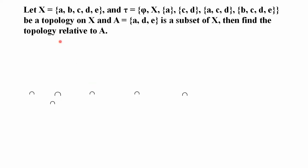Let X = {a, b, c, d, e} and τ = {φ, X, {a}, {c,d}, {a,c,d}, {b,c,d,e}} — یہ ہمارے پاس main set اور اس کی topology given ہے۔ And A = {a, d, e} is a subset of X۔ Then find the relative topology on A with respect to X.